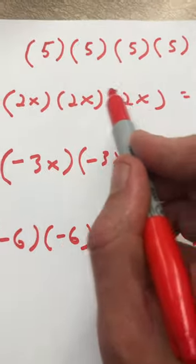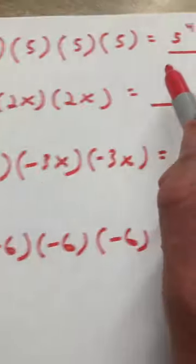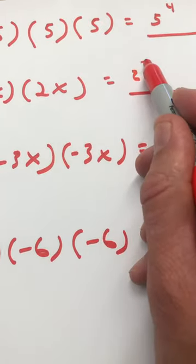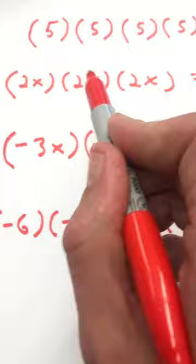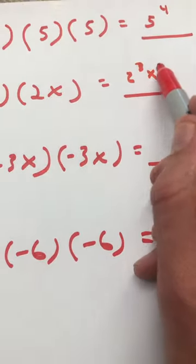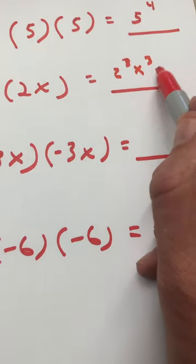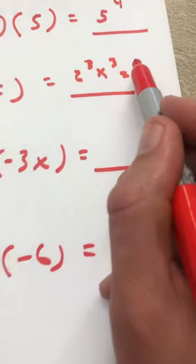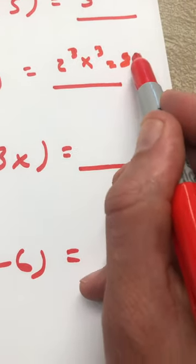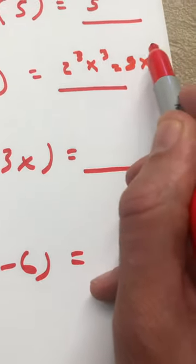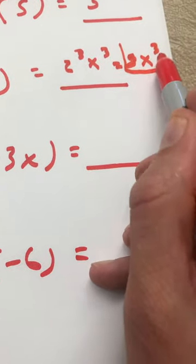Let's say we have 2x times 2x times 2x. That would be 2 times 2 times 2, which is 2 to the third power. We also have x times x times x, which is x to the third power. So we can write that as 2 to the third power times x to the third power, which equals 8x to the third. That would be the best way to write that.